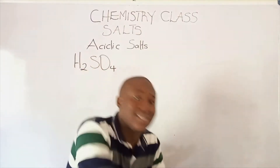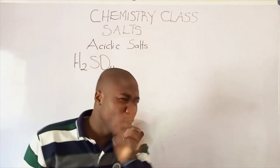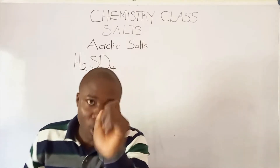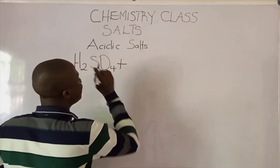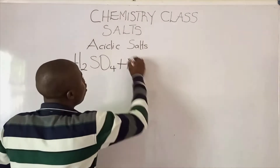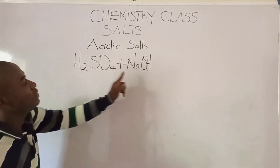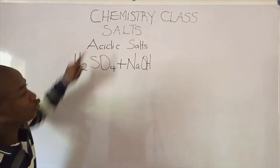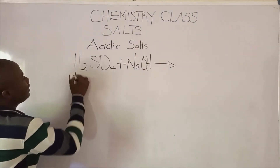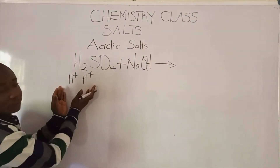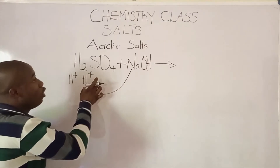It should be noted that for an acidic salt to be formed, monobasic acids are not used. For example, we have H₂SO₄ reacting with sodium hydroxide. In this context, the hydrogen ion will not be completely replaced. In this acid there are two hydrogen ions, so the sodium is just replacing one of the hydrogen ions.